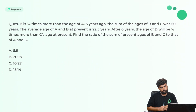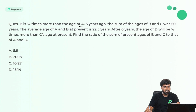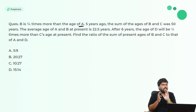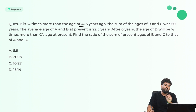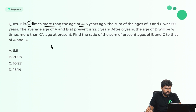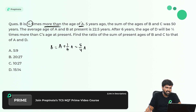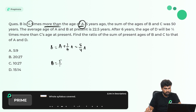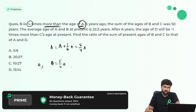Next question: T is 1/4 times more than the age of A. Whenever you have 4 to 5 lines of information, always quickly convert to equations. 'One by four times more than' means B = A + (1/4)A = (5/4)A. So if A is A, then B = (5/4)A.